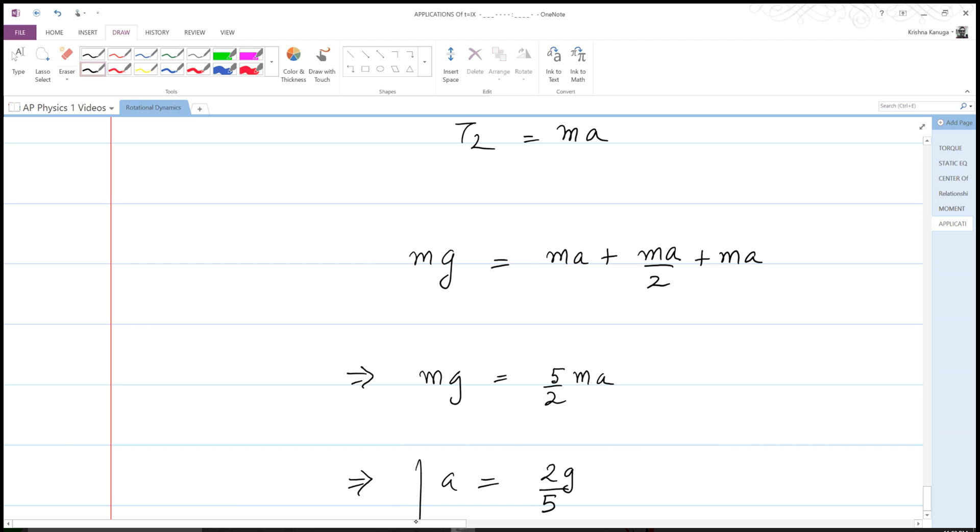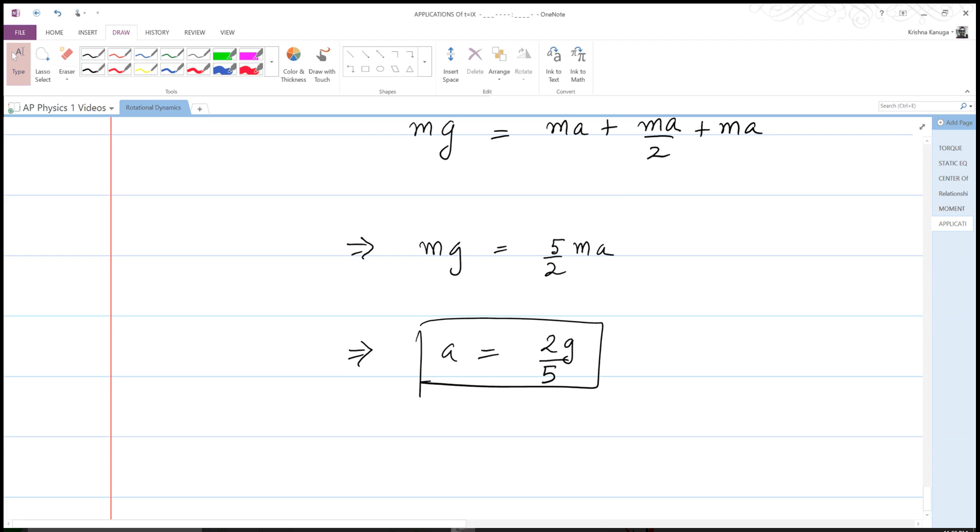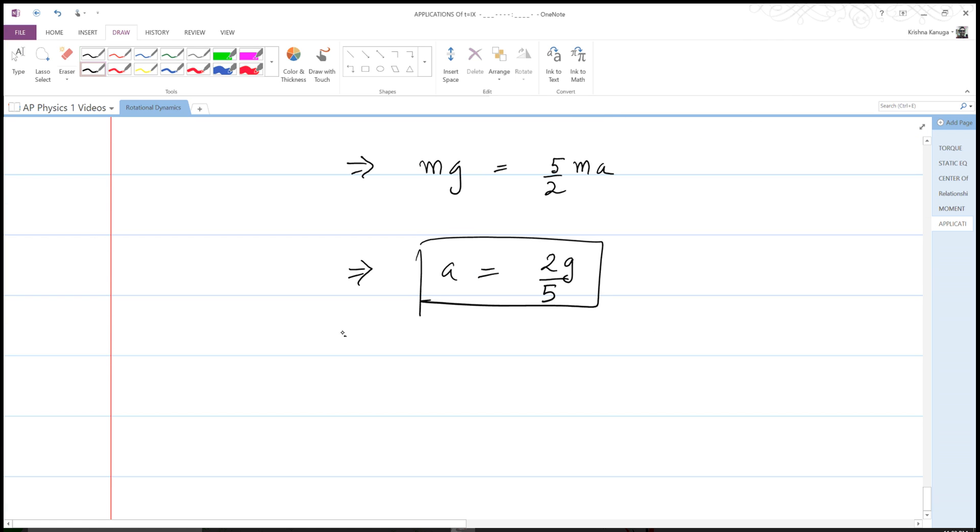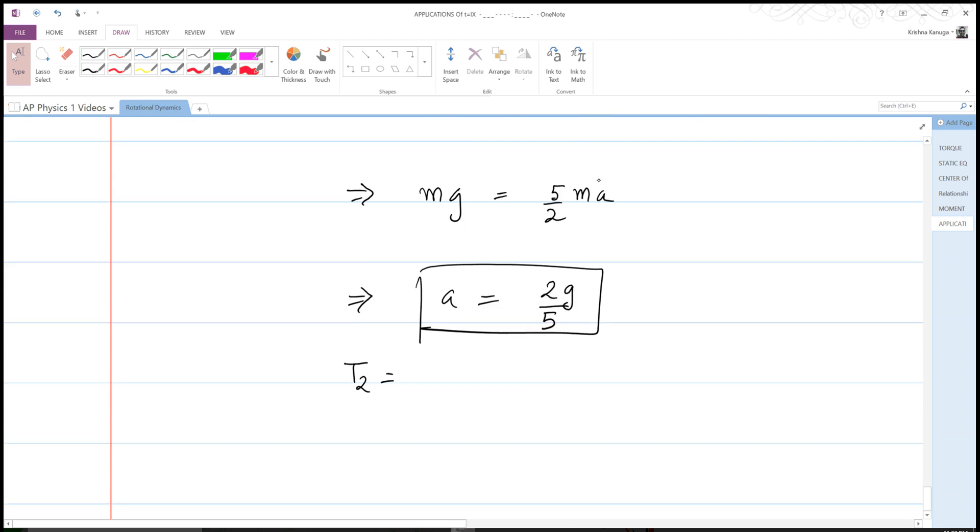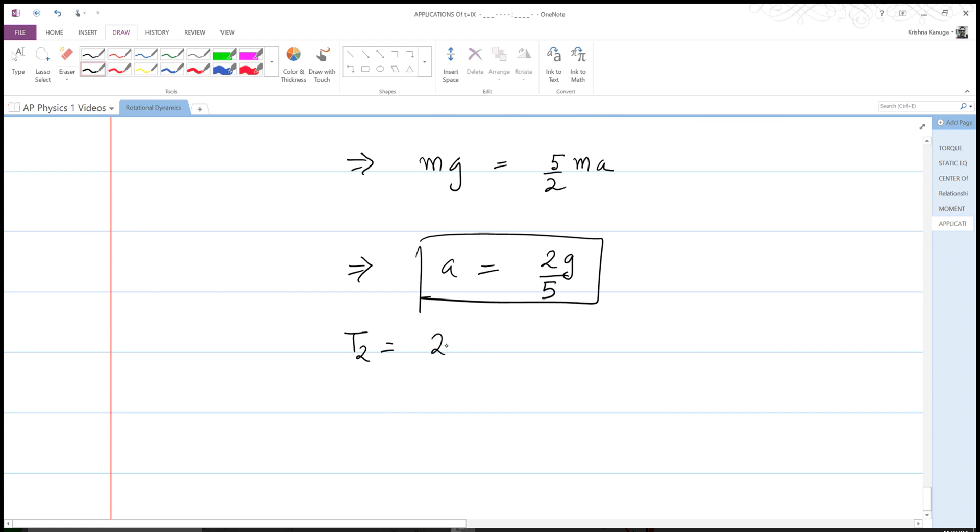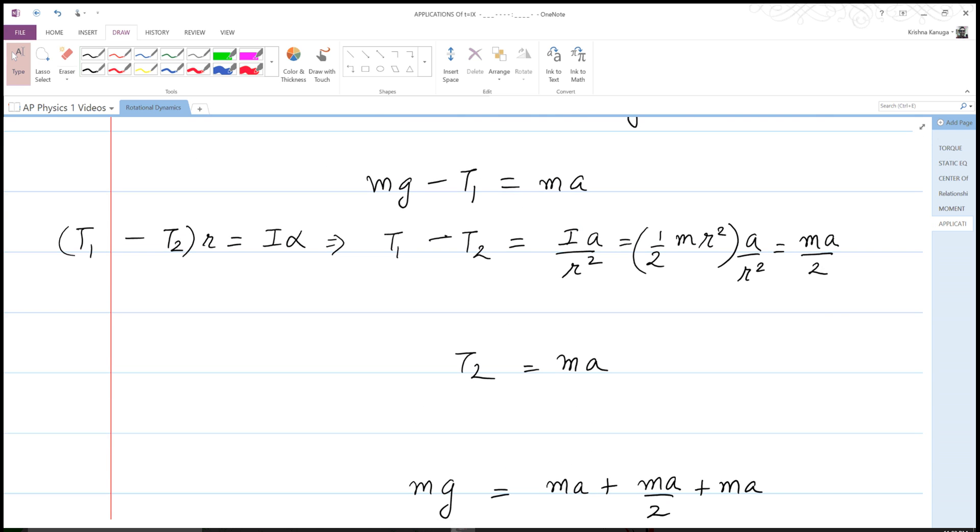Once I know a, I can calculate T1, T2, everything else. If we do it correctly, T2 ends up being equal to ma, so it is equal to 2mg over 5.